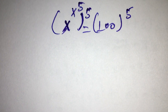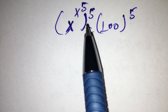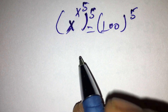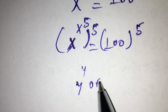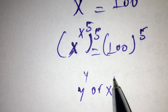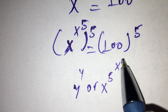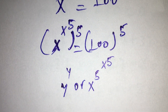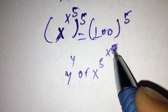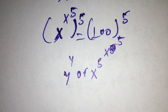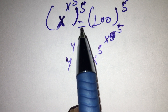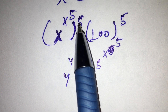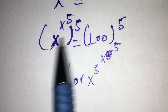Next, why do we multiply by 5? Because of the same exponent. Like this: y to the power of y, or x to the power of 5, the power of x to the power of 5. Because of the same exponent here — 5. So we multiply both sides by 5.